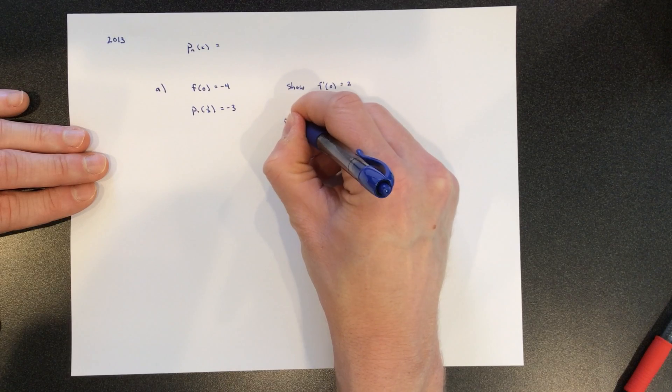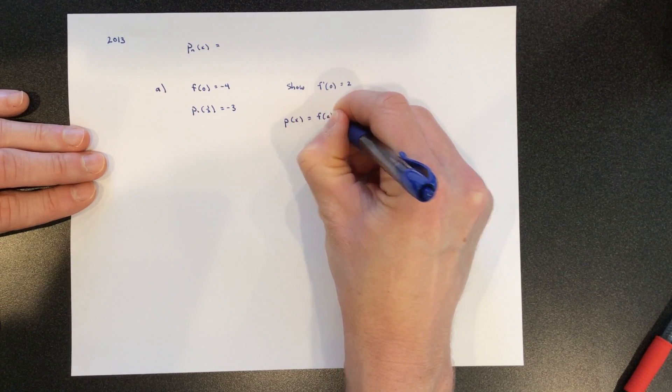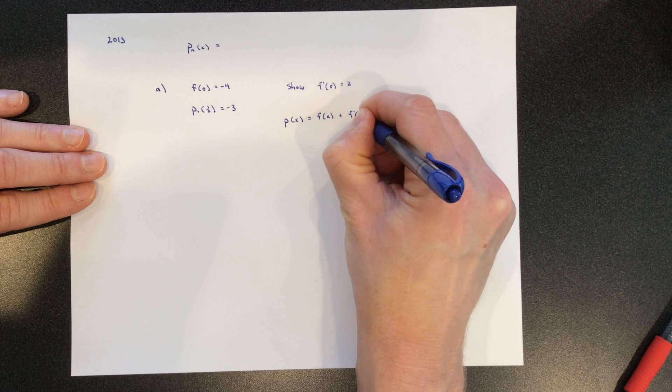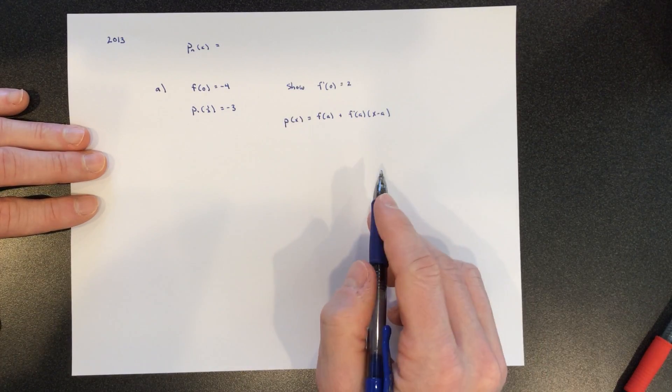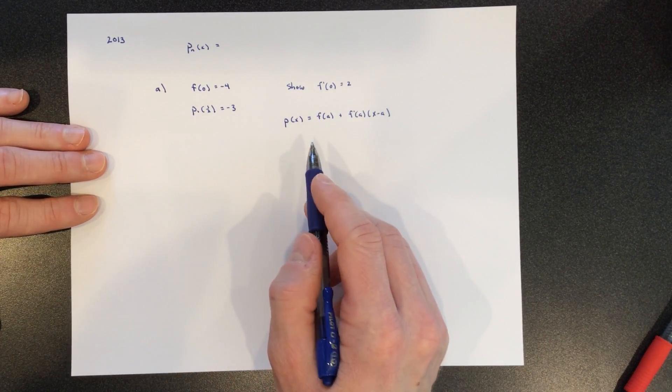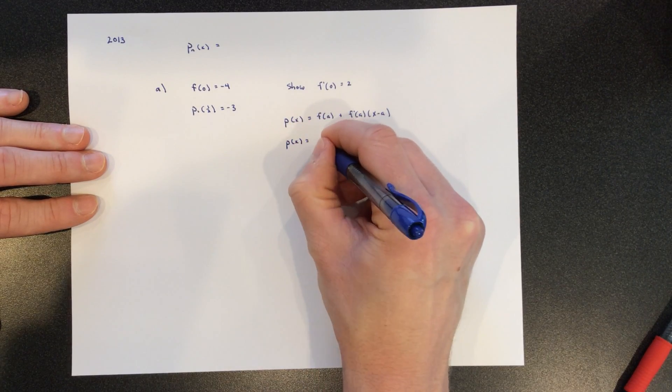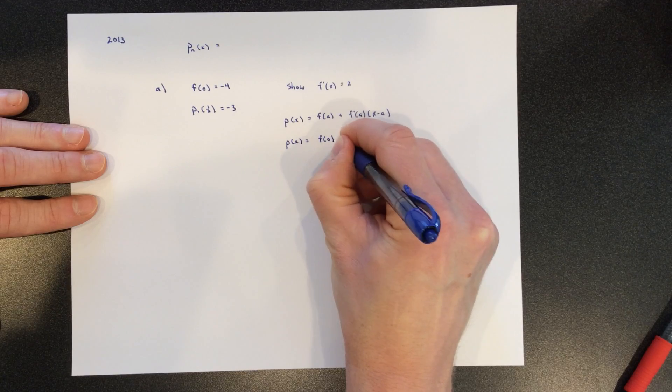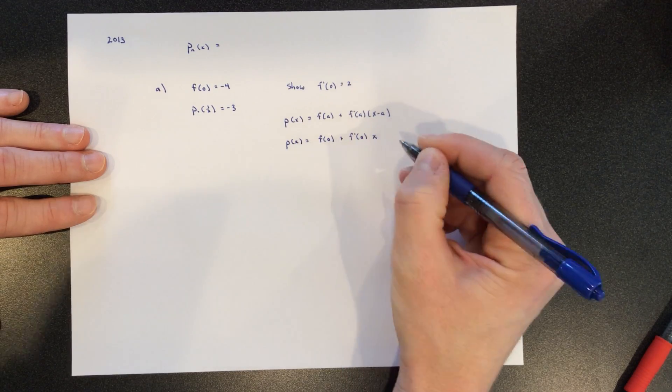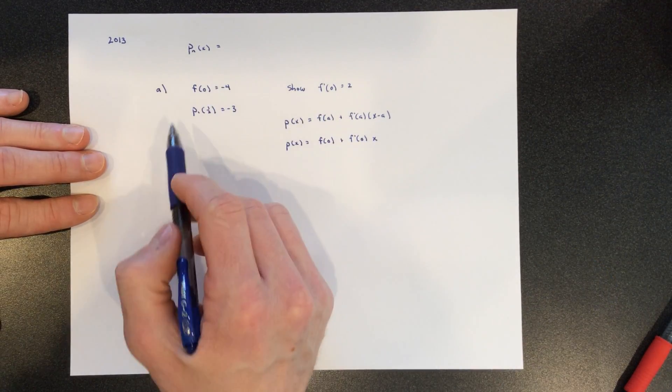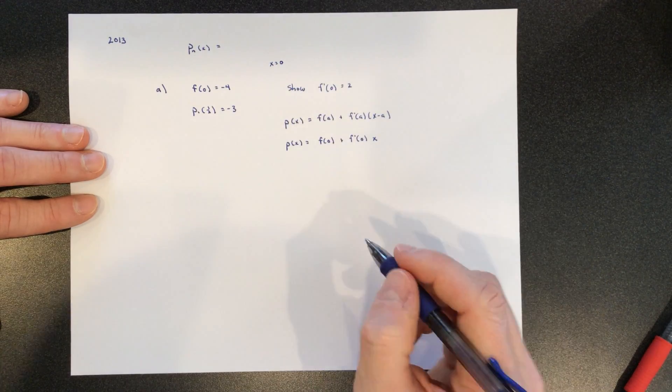We'd say p of x equals f of a plus f prime of a times x minus a. So what they were telling us is that this is really, a is 0, so f of 0 plus f prime of 0 times x. That's how we would write this because we know it's centered at 0.